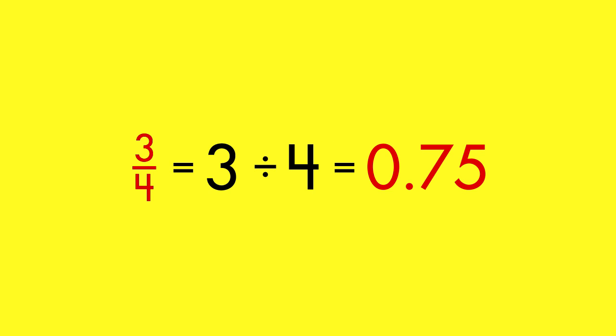The fraction three-fourths can be read as three divided by four. Three-fourths has a quotient of seventy-five hundredths.